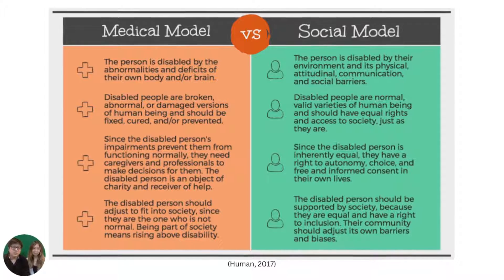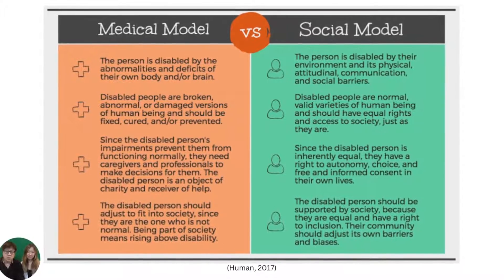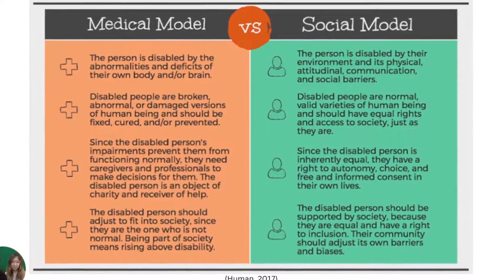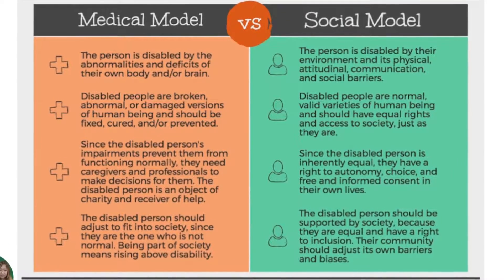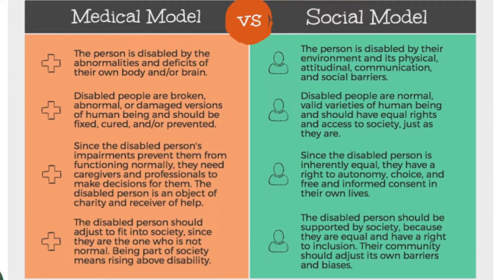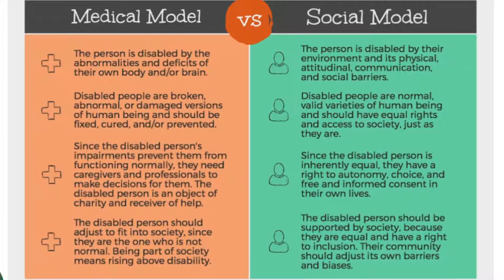Here we see a chart displaying the differences between the medical model of disability versus the social model of disability. In the medical model, the person is disabled by the deficits of their body or brain. Disabled people are seen as broken and needing to be fixed and cured. Caregivers and professionals make decisions for them, and they're an object of charity and receiver of help. The disabled person needs to adjust to fit into society since they are the one who is not normal.